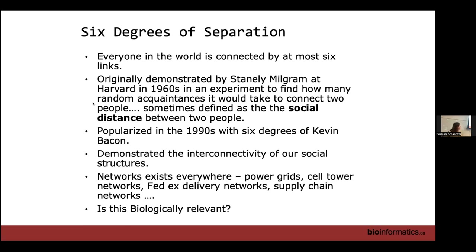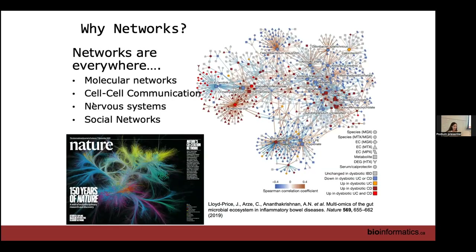There was also a game in the 80s — six degrees of Kevin Bacon — where you could connect any actor ultimately back to Kevin Bacon. The idea is that you can create networks of people who are connected by shorter distances than you'd think. The same thing is relevant in biology, where we have lots of different networks that help summarize globally what's happening.